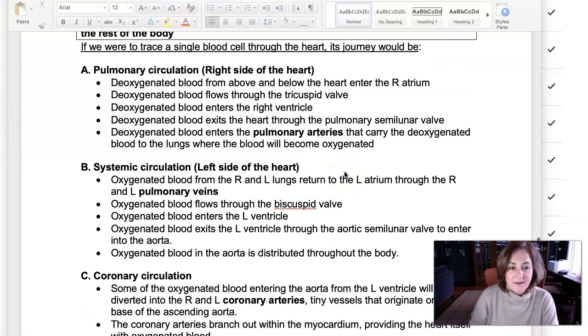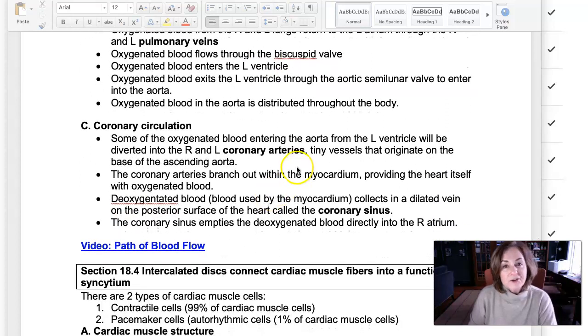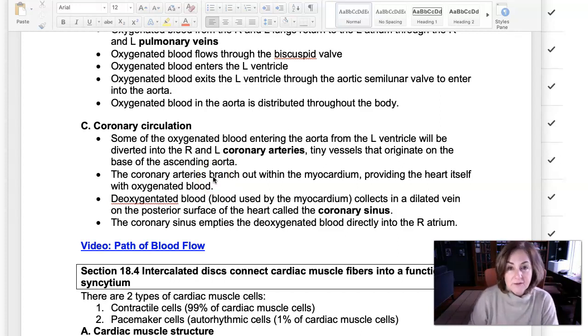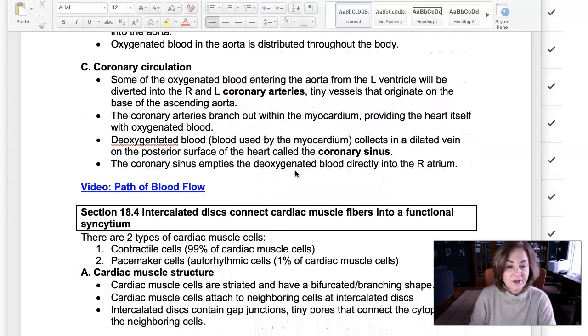But not only do we look at that, the pulmonary circulation and the systemic circulation, we need to know about the coronary circulation, or in other words, the blood flow to the heart itself. So the blood that's flowing through the heart doesn't actually nourish the heart. The heart's just pumping that blood. And so the coronary circulation is how the heart itself is going to get oxygen and nutrients.